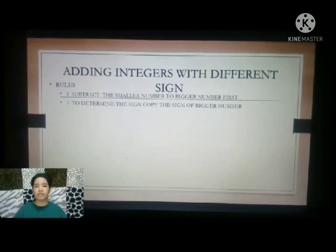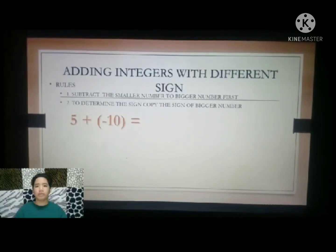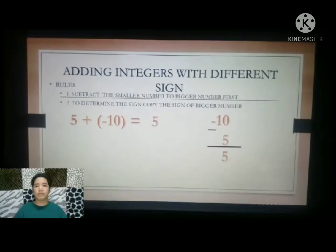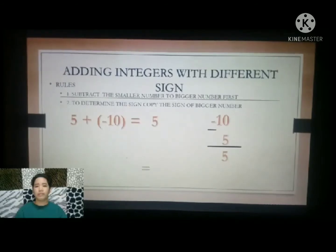Second example: Positive 5 plus negative 10. Subtract the smaller number from the bigger number first: 10 minus 5 equals 5. To determine the sign, copy the sign of the bigger number. Negative 10 is bigger in absolute value than positive 5, so our answer is negative 5.